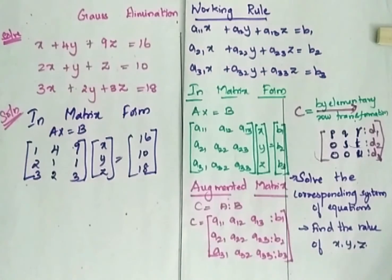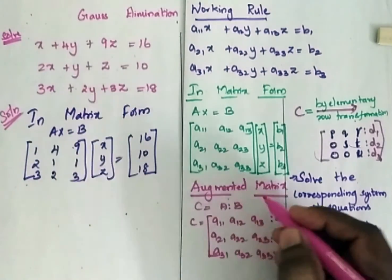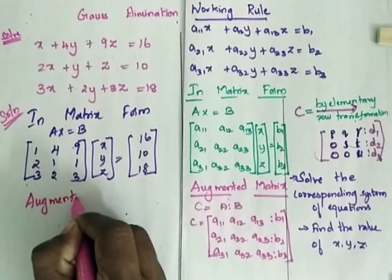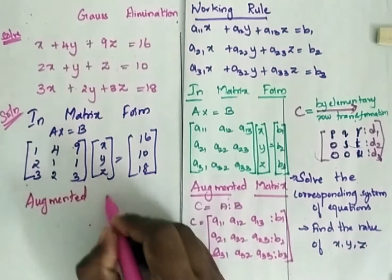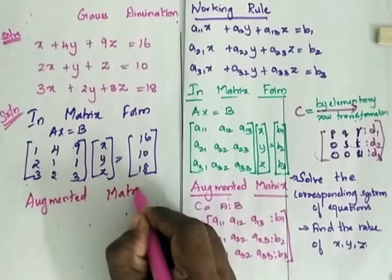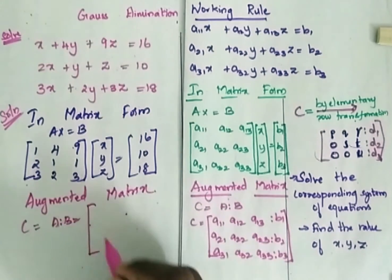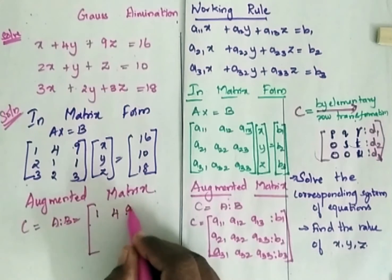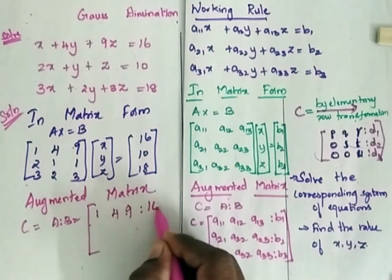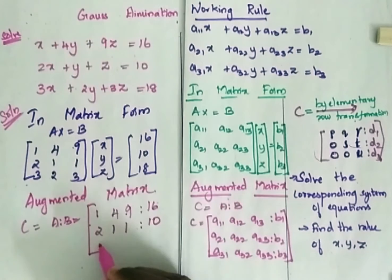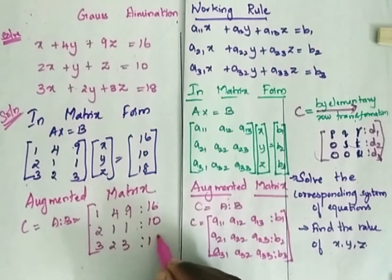Now I have to write this matrix in augmented form. So the augmented matrix C is equal to [A | B]: the first row is 1, 4, 9 | 16; the second row is 2, 1, 1 | 10; and the third row is 3, 2, 3 | 18.